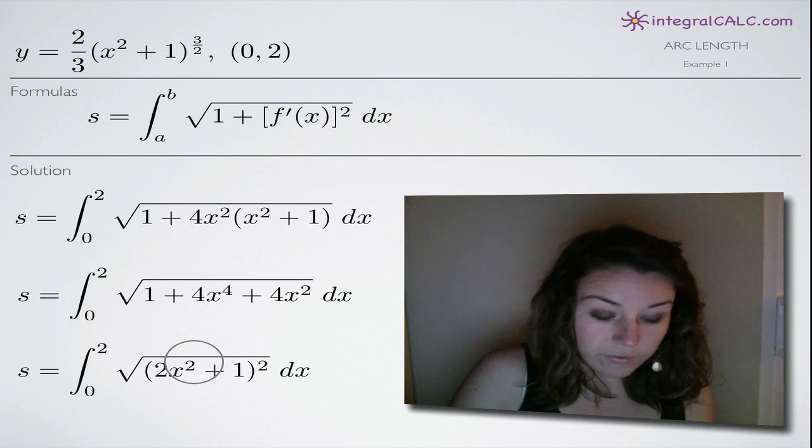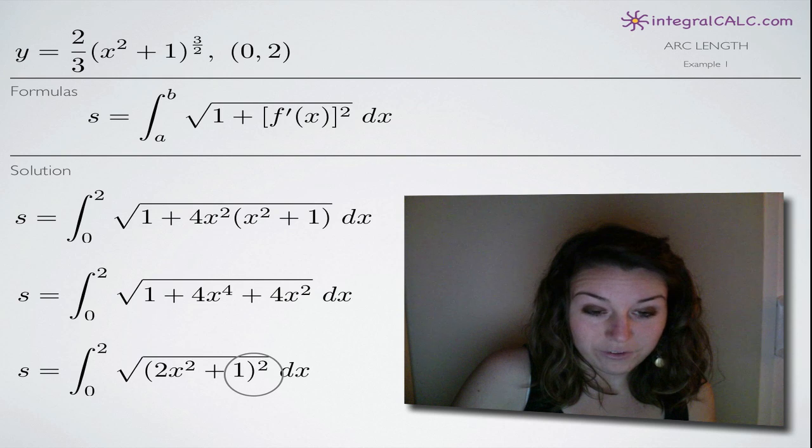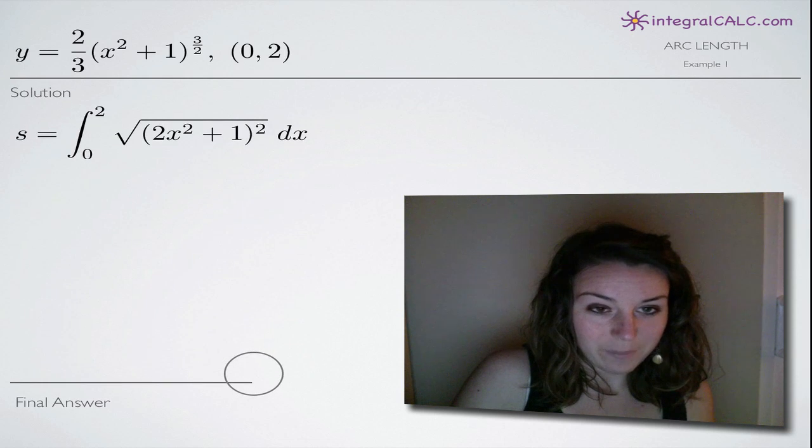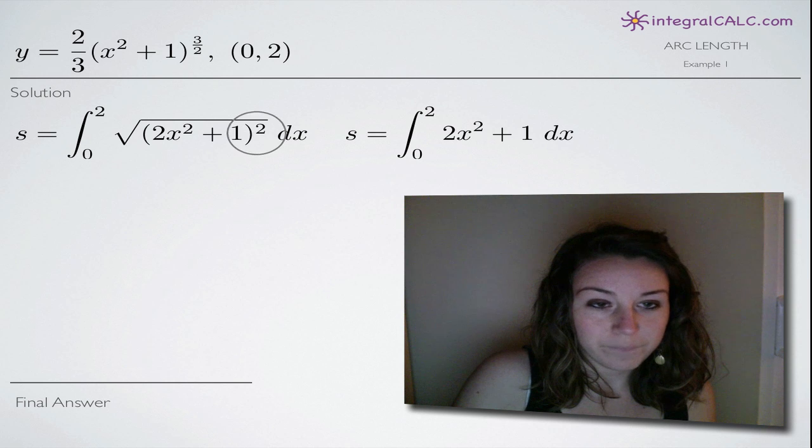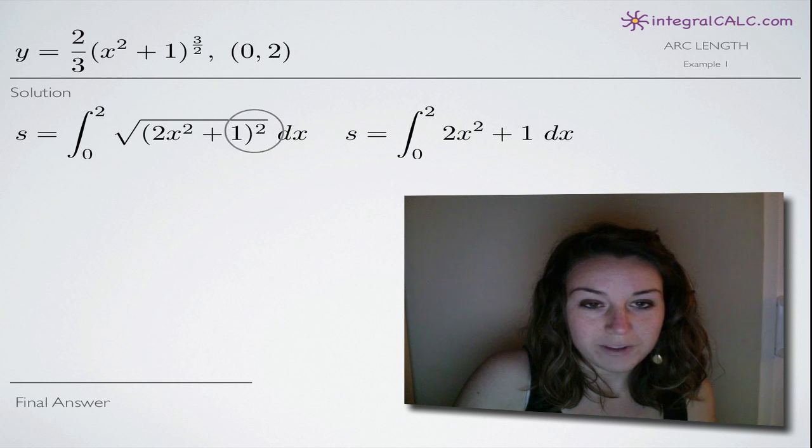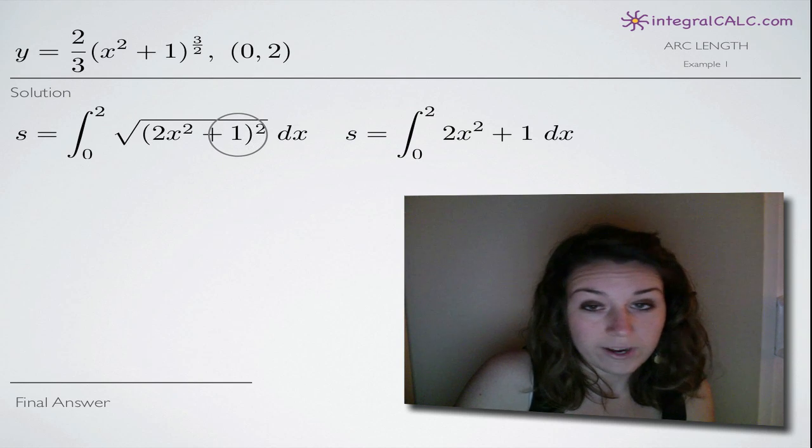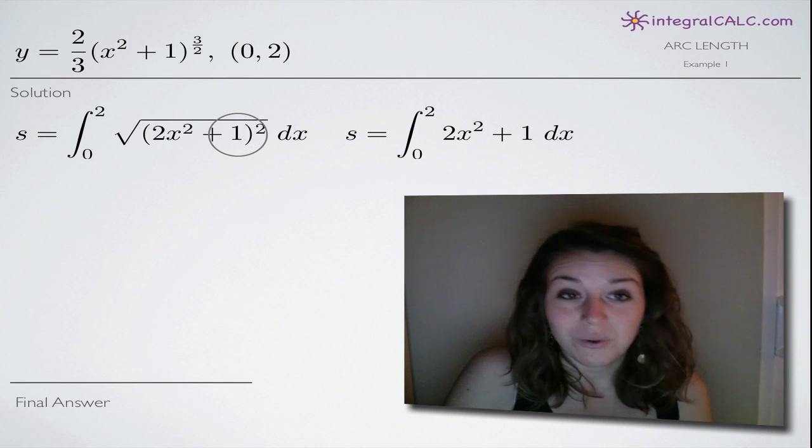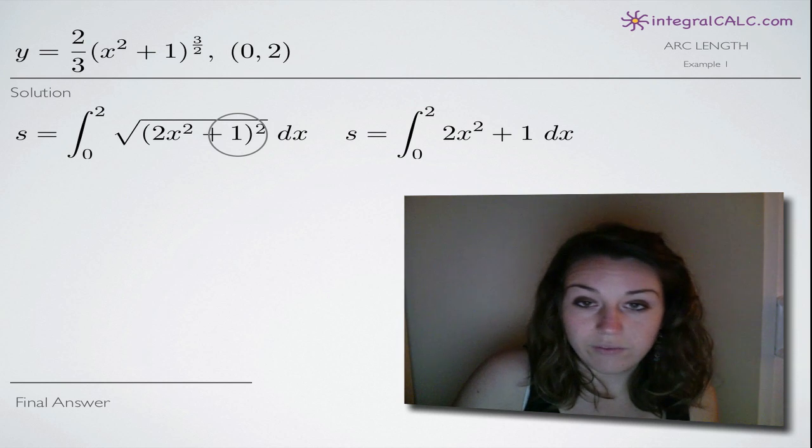So that's how this breaks down as a factor. So then, of course, if we're taking the square root of something that's squared, we're just going to end up with the original, right? The square root of the squared means that this squared here will go away as will the square root and we're just left with this 2x squared plus 1 here. So now we've gotten to a point where we can actually take the integral and then once we do, we'll evaluate from 0 to 2.